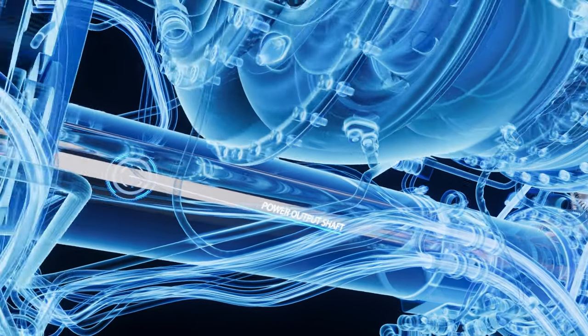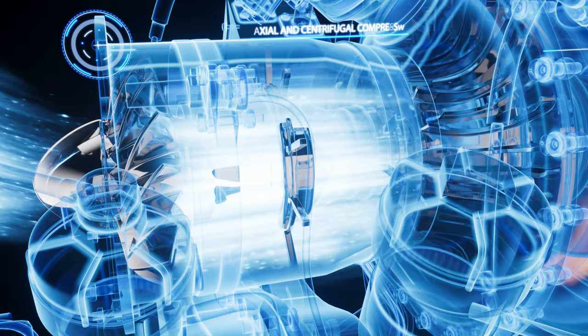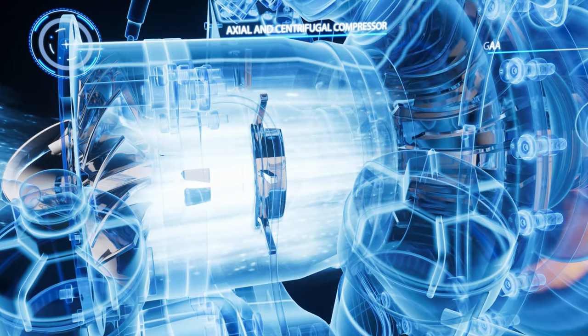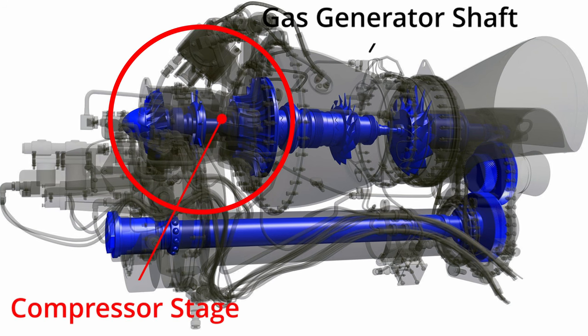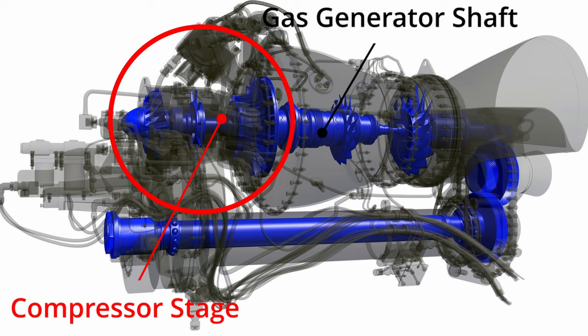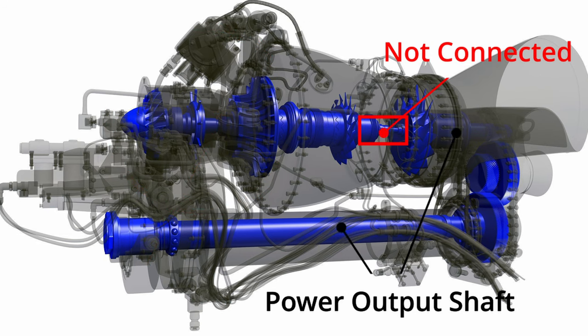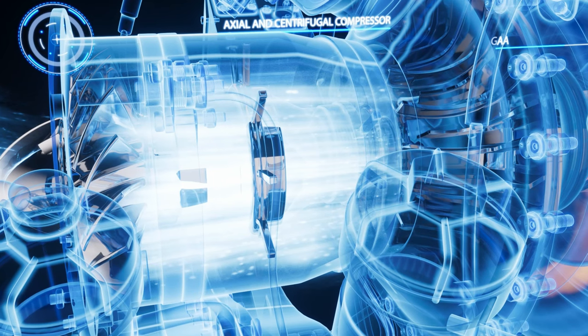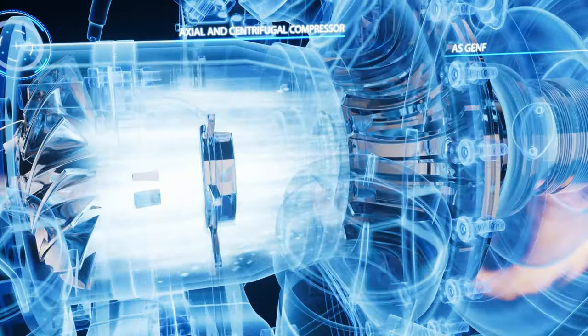To provide the sufficient air for the process, a compressor is required. The compressor stage is mounted on a different shaft that is not connected to the power output shaft. An axial and a centrifugal compressor are used for this type of engine.